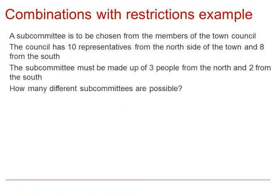We know that there are ten people from the north, of which we need to choose three. And then we know that there are eight from the south, of which we need to choose two. If we work those two out using our calculator, we would get the answer shown here.